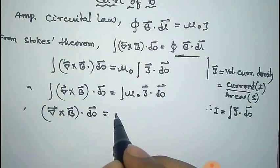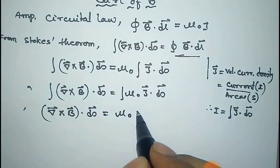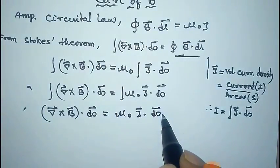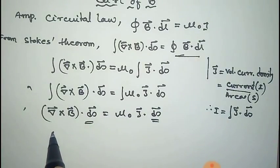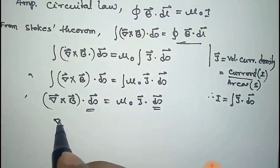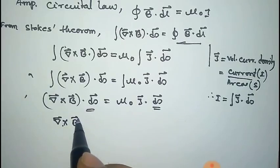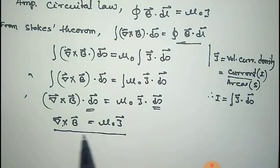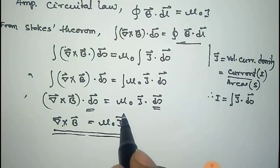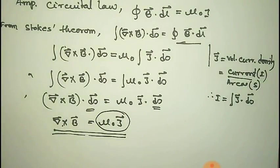So μ₀∮j·ds. Now we can cancel the ds vector from both sides, giving us ∇×B = μ₀j. Thus, this is the relation we have derived: curl of B equals μ₀j.